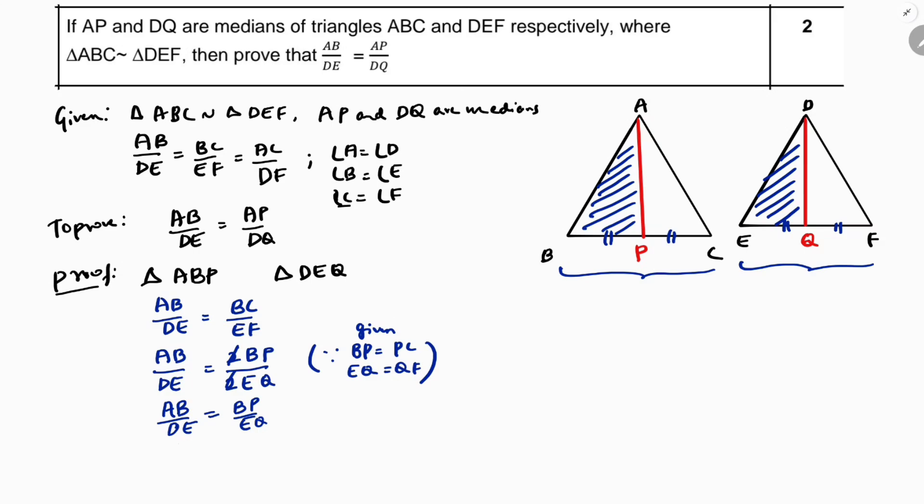And in between angle B equals angle E. This is given because triangles are similar.